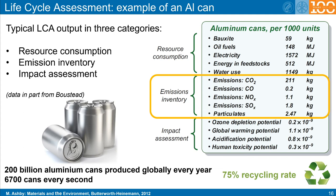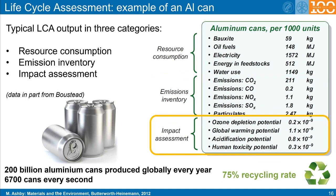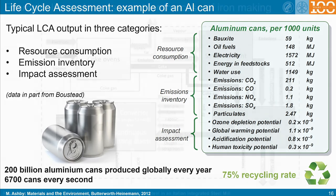The third category lists the impact assessment, which shows how these different emissions and consumption items act on aspects such as ozone depletion and global warming, but also on soil acidity.